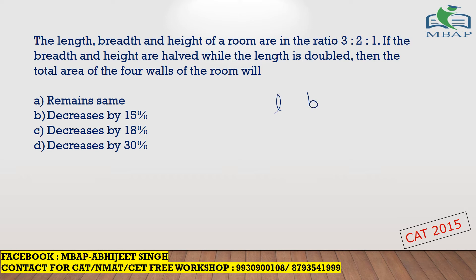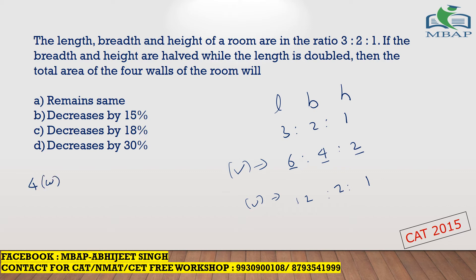They have given length, breadth, and height in the ratio 3 to 2 to 1. Let's assume the values are 6, 4, and 2 — so 6 is my length, 4 is my breadth, and 2 is my height. This is the original room. Now the new room: the breadth and height are halved, so breadth becomes 2 and height becomes 1, and the length is doubled to 12. They are asking about the area of the four walls, which has formula: 2 times (LH + BH).